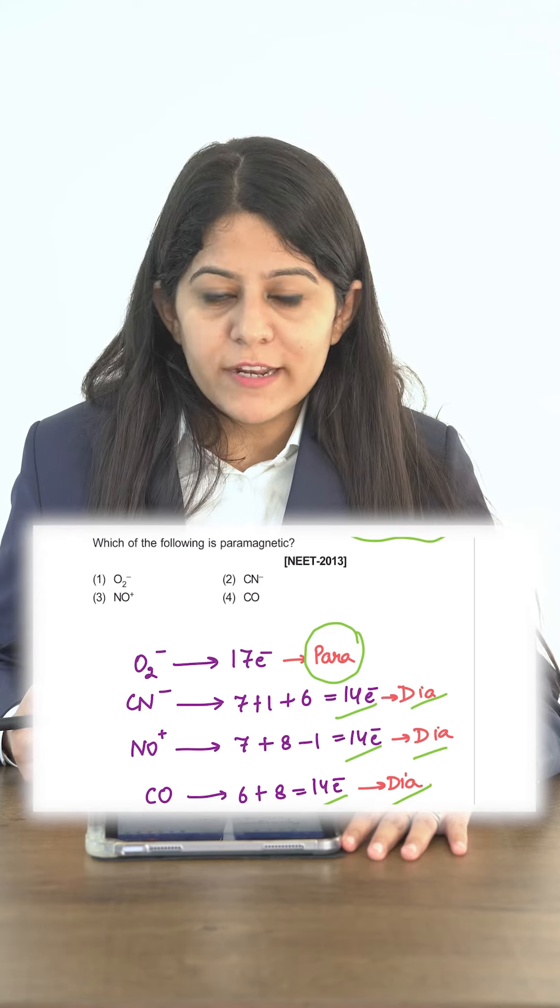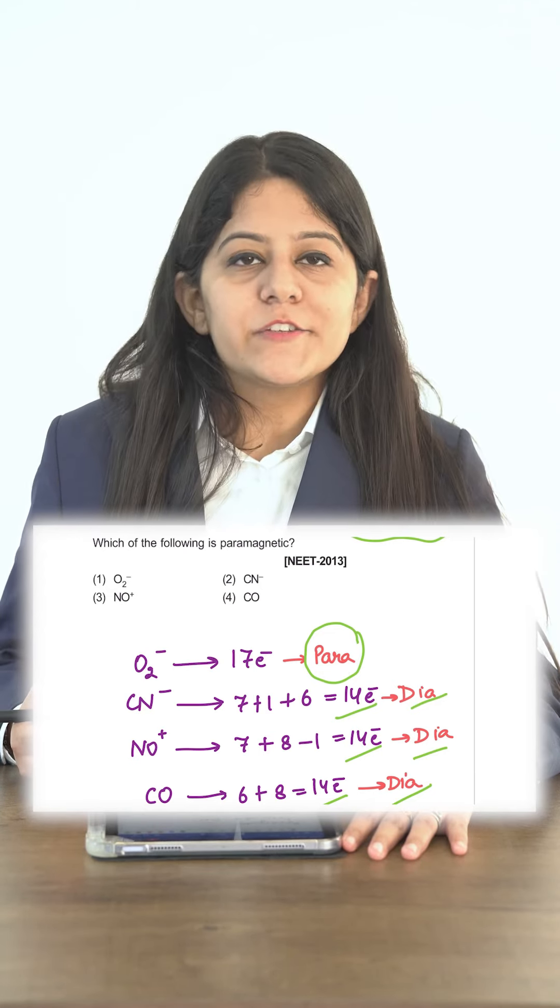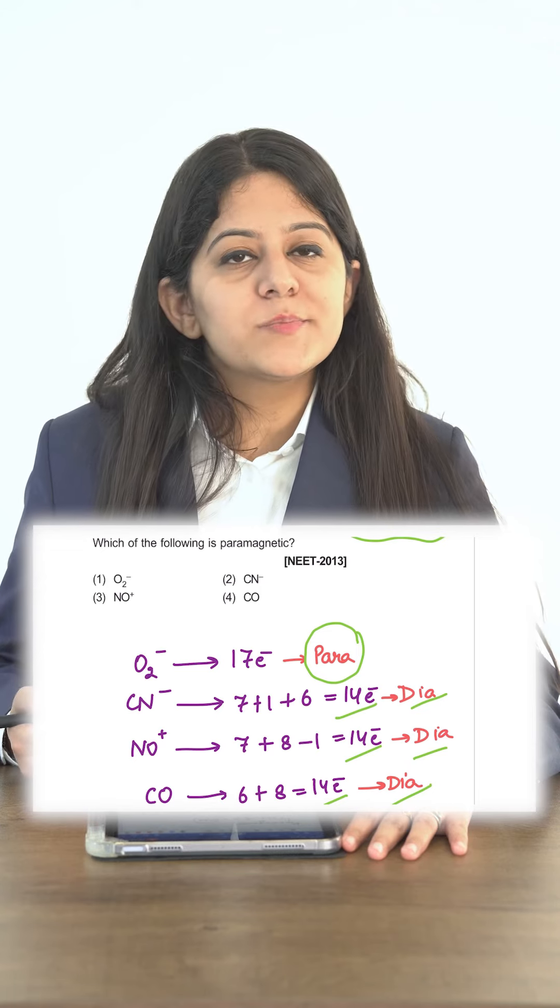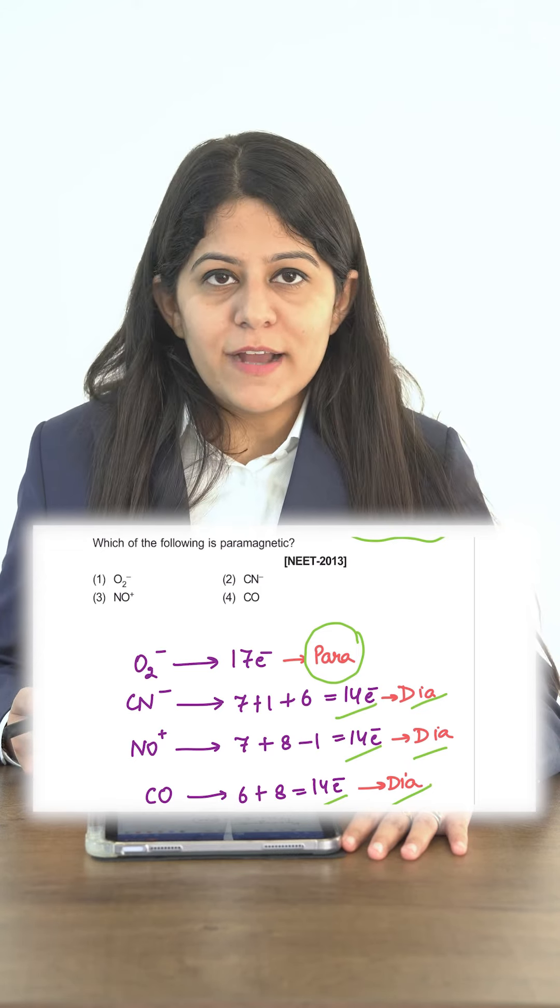So the other three have even number of electrons, so they are diamagnetic in nature. In the similar way, you can find very easily whether a particular species is paramagnetic or diamagnetic.